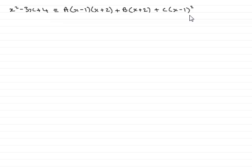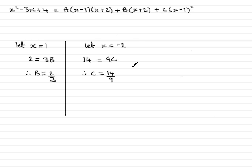Now, in our identity, what we did was we chose x to be 1, and that meant that when x was 1, we were able to work out b to be 2/3. And we went on to choose x as being -2, so that it took out these two terms and enabled us to find c. And we found c to be 14/9.